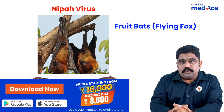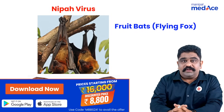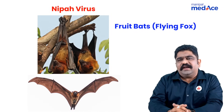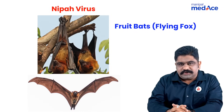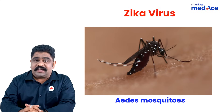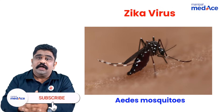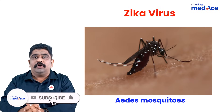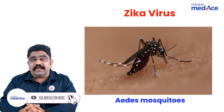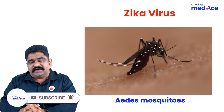Nipah spreads through the saliva of fruit bats, and in some countries via flying foxes. In the case of Zika virus, it is spread through vector bite transmission by the mosquito Aedes aegypti and also Aedes albopictus.